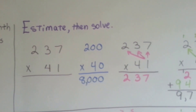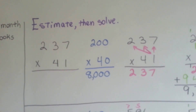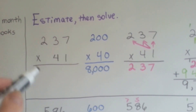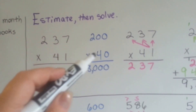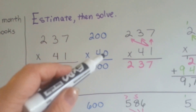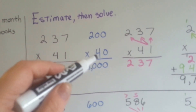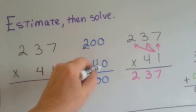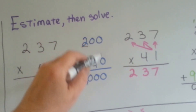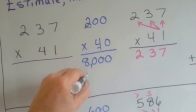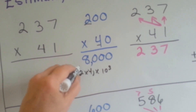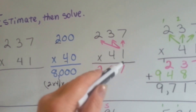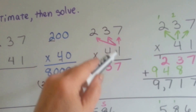So if we were to estimate and then solve these, here's what we would have: 237 times 41. If we want to estimate, 237 rounds off to 200 — the 3 tells the 2 to stay the same. The 1 tells the 4 to stay the same. So we've got 200 times 40, which is 8,000. Now to do it for real, we would first multiply the ones place: 1 times 7 is 7, 1 times 3 is 3, and 1 times 2 is 2.